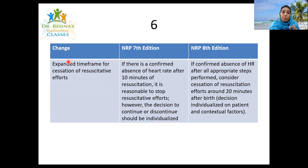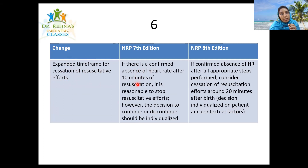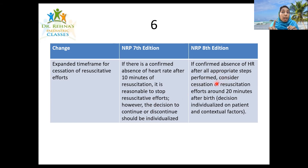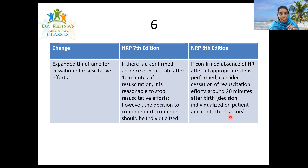The sixth change is about the expanded time frame for cessation of resuscitative efforts. According to NRP 7, if there is a confirmed absence of heart rate after 10 minutes of resuscitation, it is reasonable to stop. In NRP 8, if confirmed absence of heart rate persists after all appropriate steps are performed, consider cessation after 20 minutes. In NRP 7 it was 10 minutes; in NRP 8 it is 20 minutes. The decision remains individualized based on patient and contextual factors.